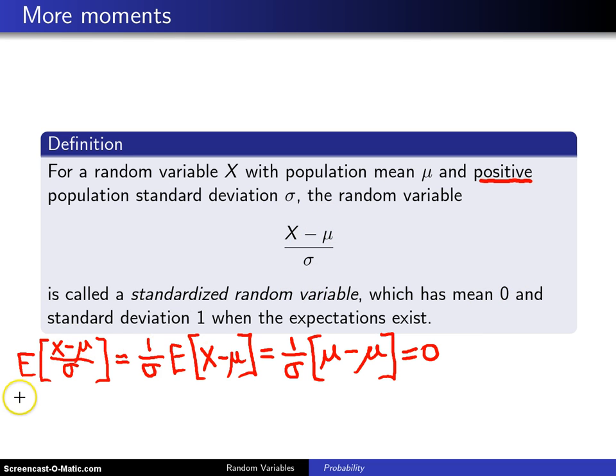Now the second thing here is it has a standard deviation of 1, so let's figure out the variance and then when you take the square root of it you'll get the population standard deviation. Well we still have that constant 1 over sigma, but because variance is a quadratic operator, that sigma or 1 over sigma in this case comes out squared.